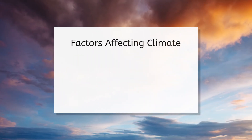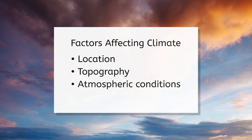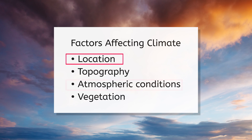Climate is complex. Things like location, topography, atmospheric conditions, and even vegetation all play a role in determining the type of climate an area has. Let's explore some of these factors — specifically, we'll focus on location and atmospheric conditions. But feel free to research some other factors on your own.